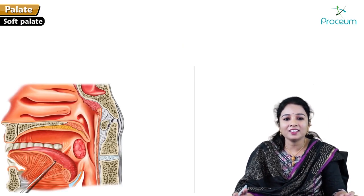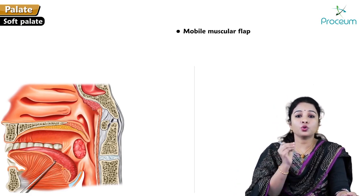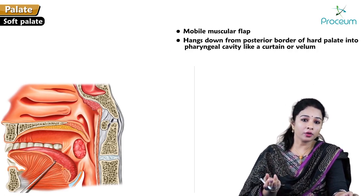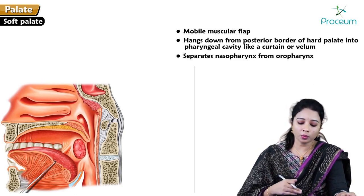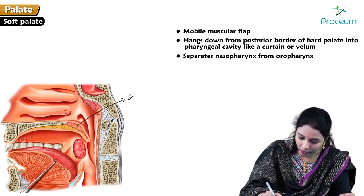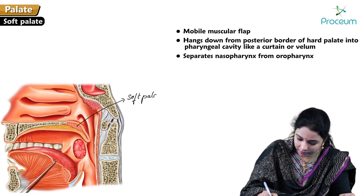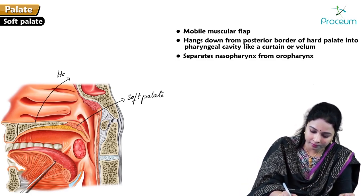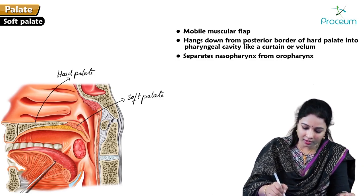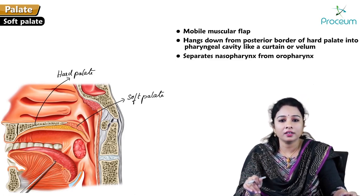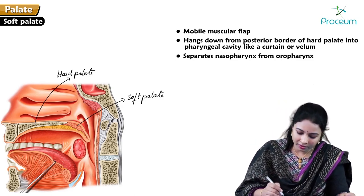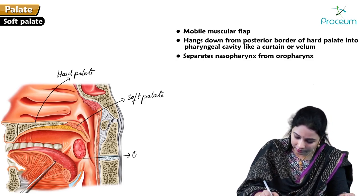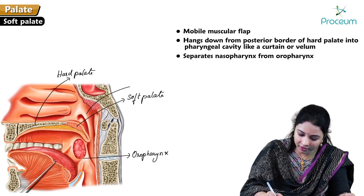Moving on to the soft palate. The soft palate is a mobile muscular flap which hangs down from the posterior border of the hard palate into the pharyngeal cavity like a curtain or velum. It separates the nasopharynx from the oropharynx.